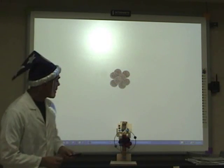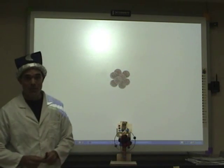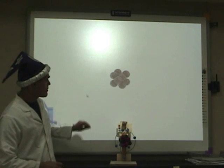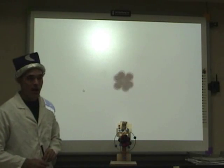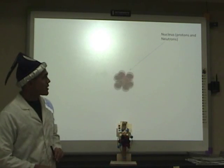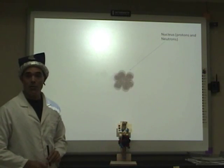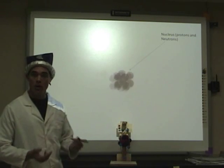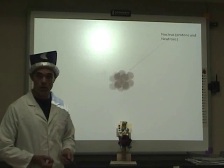On the board right now happens to be the nucleus of an atom. We don't know what element it is yet, but I'm going to go ahead and tap that and we put that nucleus in motion. We find that inside the nucleus of an atom, it's actually made up of protons and of neutrons. Protons are positively charged particles. Neutrons are neutrally charged particles, which means they have no electric charge whatsoever.